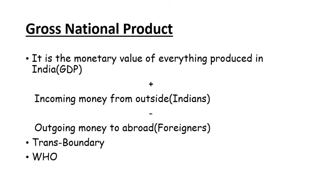Next is Gross National Product, or GNP. Its definition is: it is the monetary value of everything produced in India, plus incoming money from outside by Indians, minus outgoing money to abroad by foreigners. In GNP, we first include goods and services produced inside India, plus the income earned by Indians working in other countries and sending money back to India. For example, Priyanka Chopra acting in an American TV show - her income sent back to India is also adjusted in GNP.